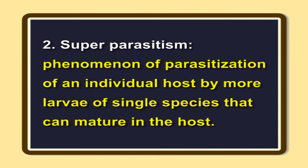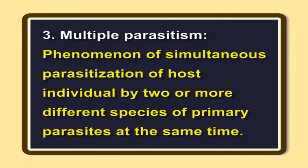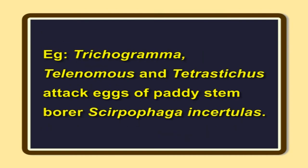Superparasitism: the phenomenon of parasitization of an individual host by more larvae of a single species than can mature in the host. Example: Apanteles glomeratus on Pieris brassicae; Trichospilus pupivora on Opisina arenosella. Multiple parasitism: the phenomenon of simultaneous parasitization of a host individual by two or more different species of primary parasites at the same time. Example: Trichogramma and Telenomous and Tetrastichus, which attack eggs of Scirpophaga incertulas. Superparasitism and multiple parasitism are generally regarded as undesirable situations, since much reproductive capacity is wasted.